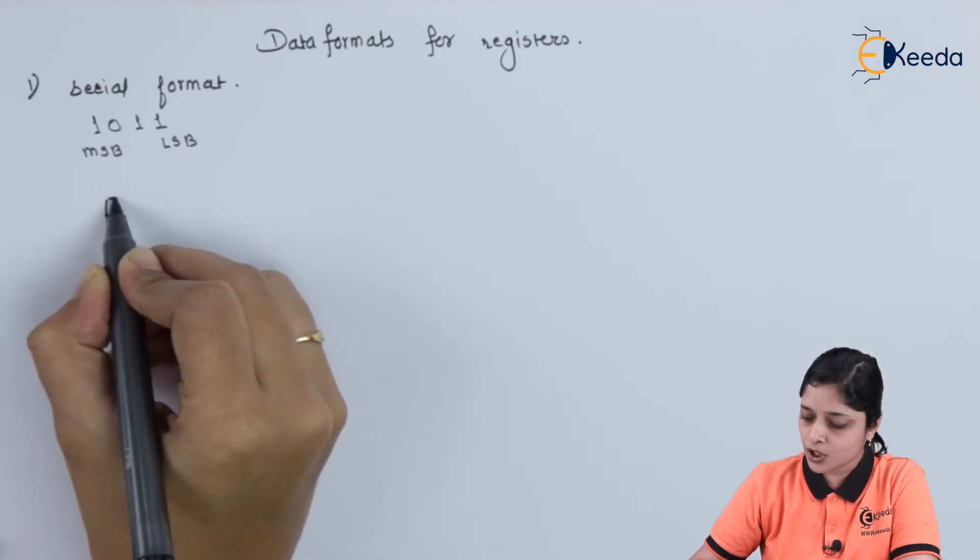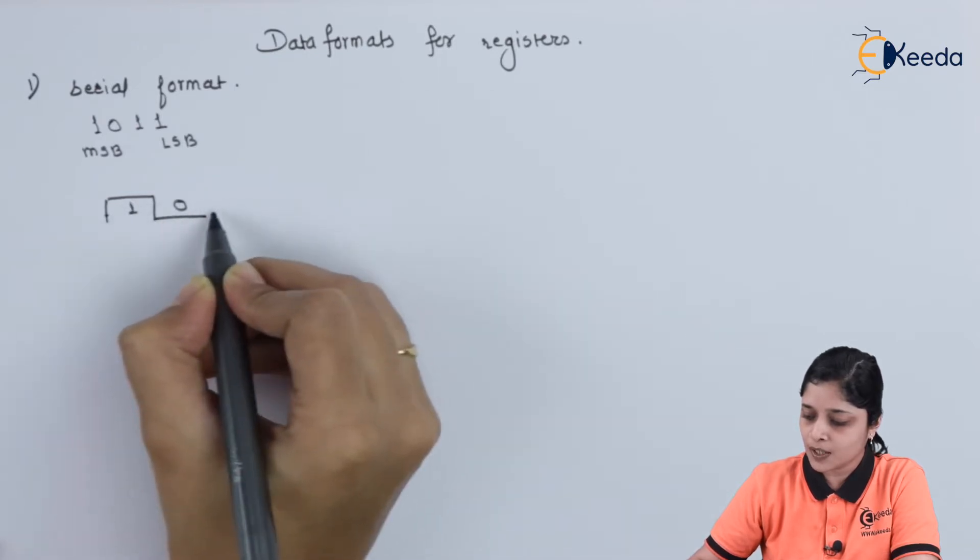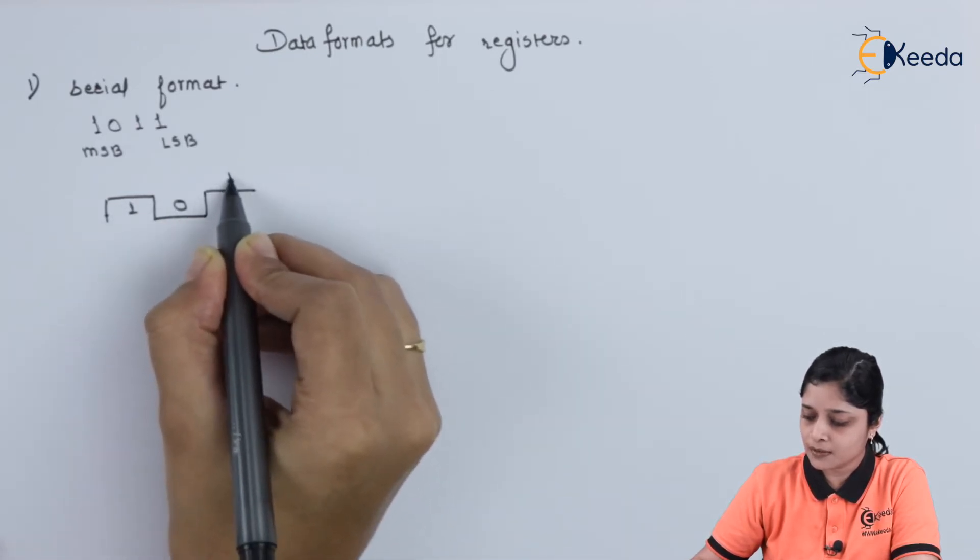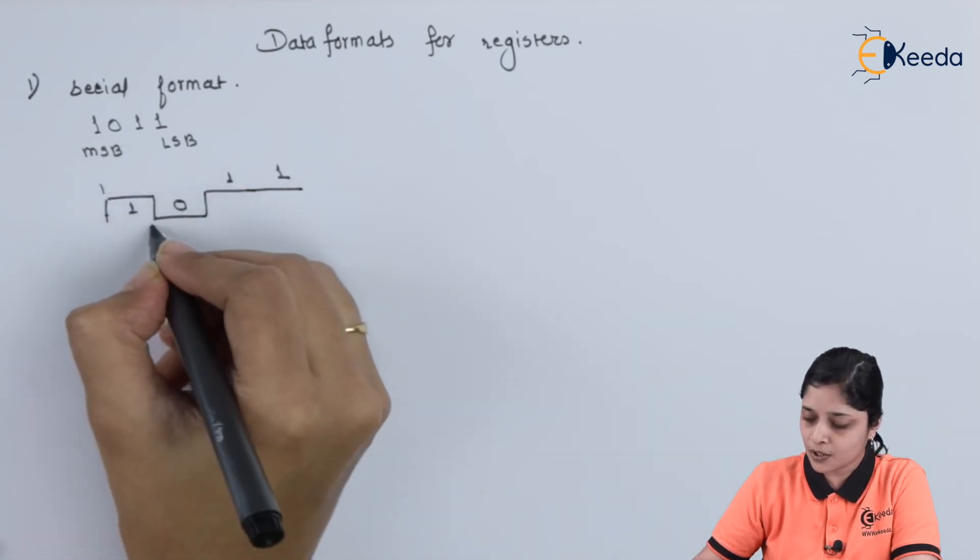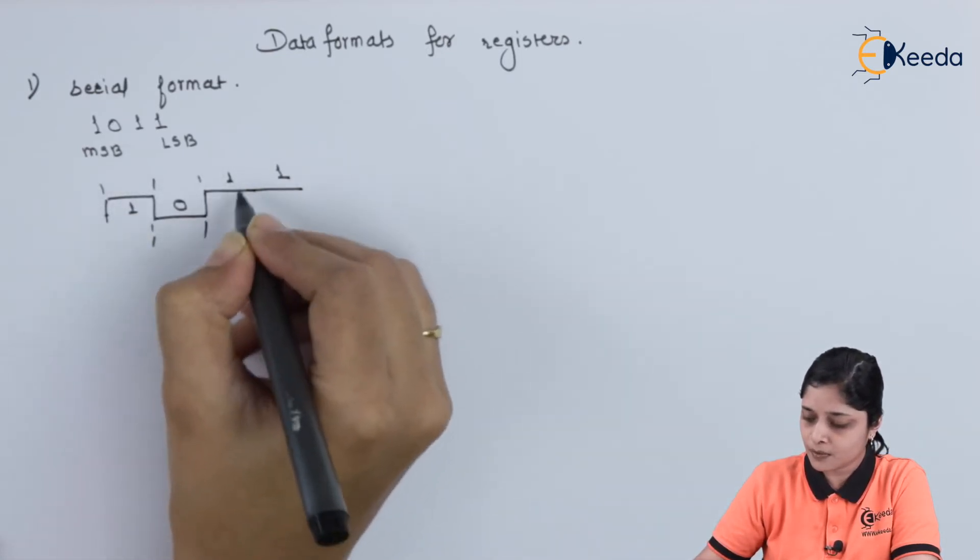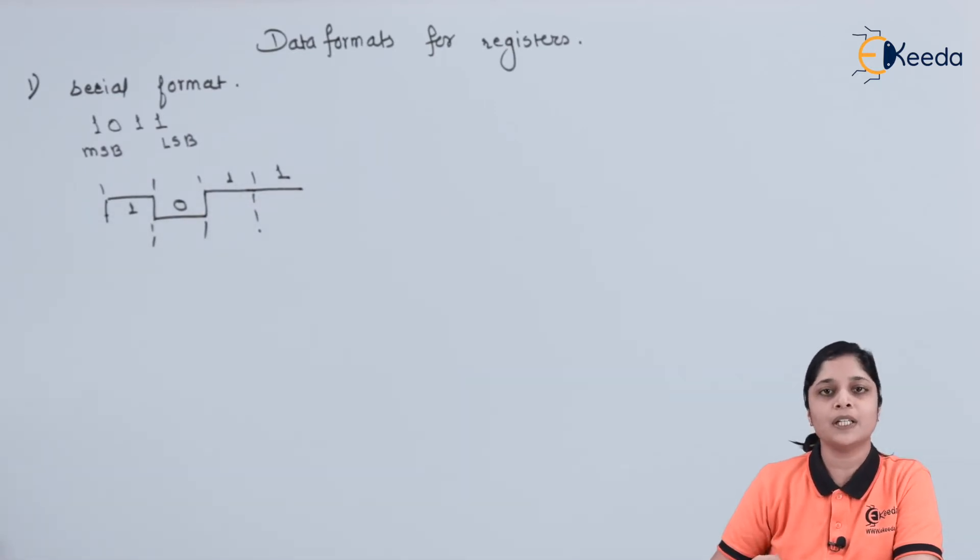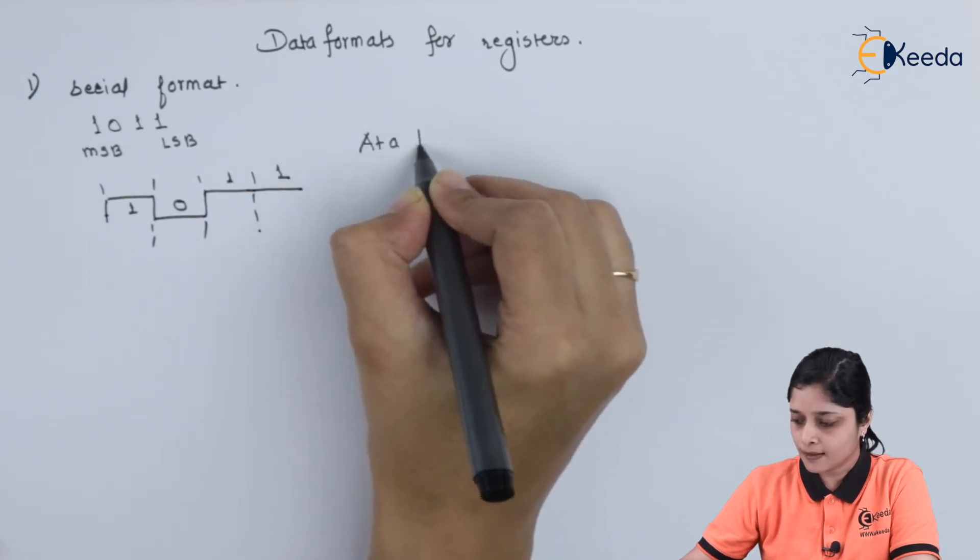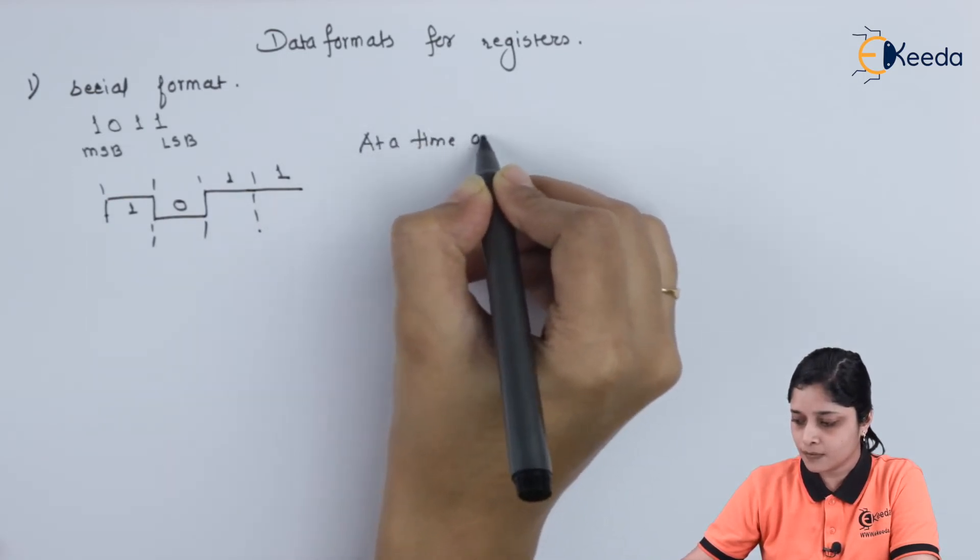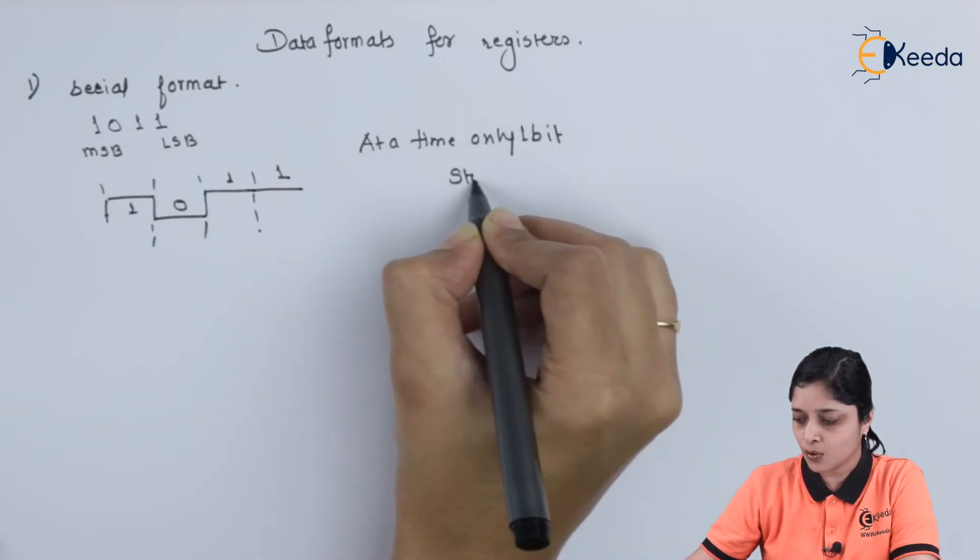This is your logic 1. Then you have to store 0, then again 1, and again 1. In this way you have to store the information. And at a time, only one bit is going to store.